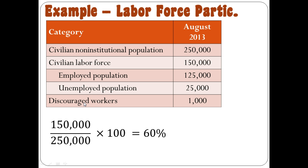Let's take a quick look at how you calculate these with a simple example. Suppose the total population 16 or over is 250,000 people, the civilian labor force is 150,000, of which 125,000 are employed and 25,000 are unemployed, and 1,000 of those not in the labor force are discouraged workers. The labor force participation rate is 150,000 divided by 250,000 times 100, which tells us that 60% of the civilian population is engaged in the labor force.